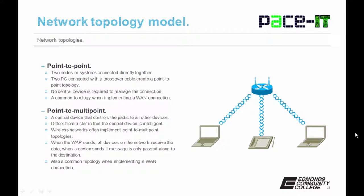Wireless networks often implement point-to-multipoint topologies. When the wireless access point sends, all devices on the network receive the data, but when a device sends, its message is only passed along to the destination. It's also a common topology when implementing a WAN across a packet-switched network.